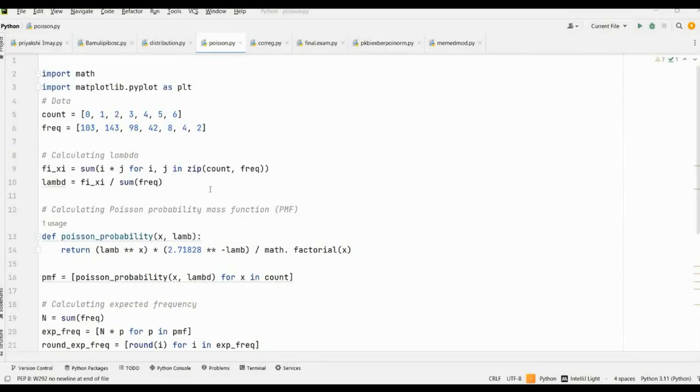Now, in PyCharm, as you can see on the screen, this is the code which you will use for fitting a distribution. At first, we have to import math and import matplotlib.pyplot as plt. Next, we enter the data which I have shown in the previous slide.